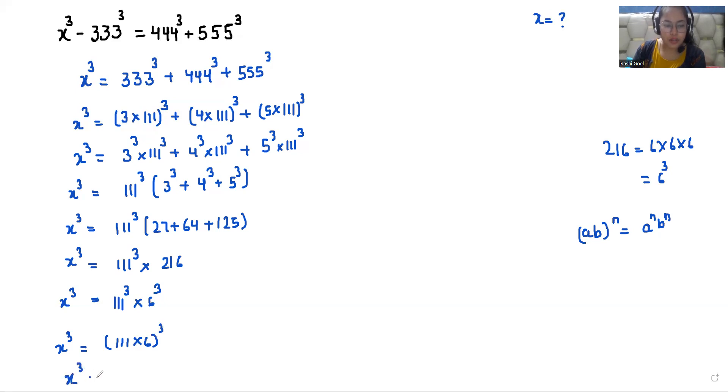So x cube equals 666 cube. Now we know that if x cube equals a, then x equals cube root of a. So here we can write x cube equals 666 cube, so x equals cube root of 666 cube. With the help of this cube root, this cube eliminates so the value of x is 666.